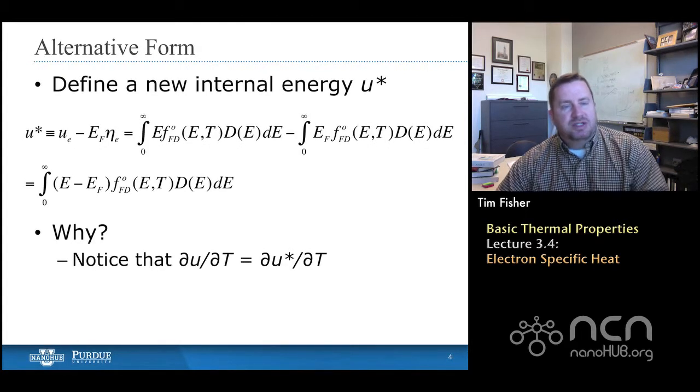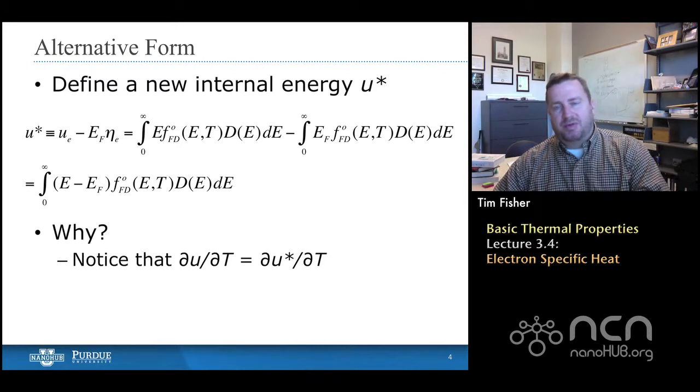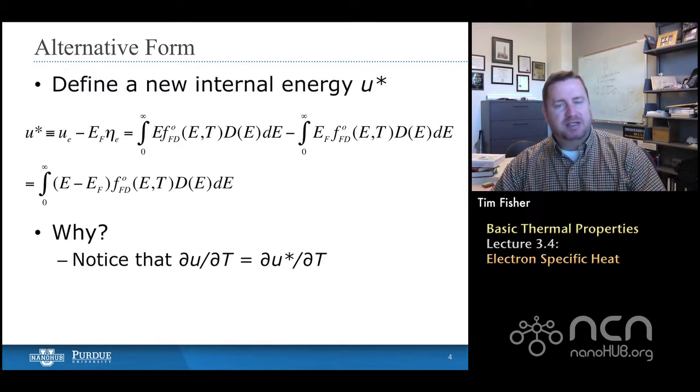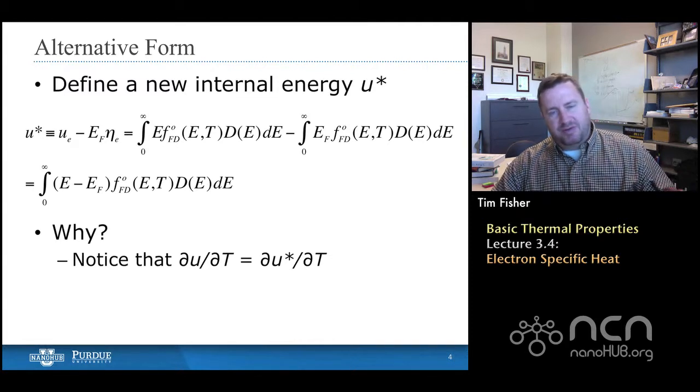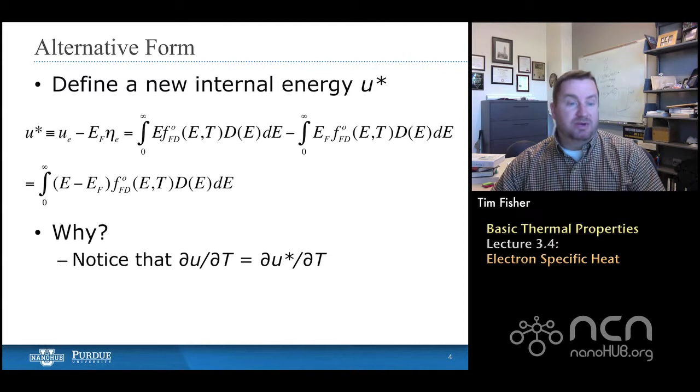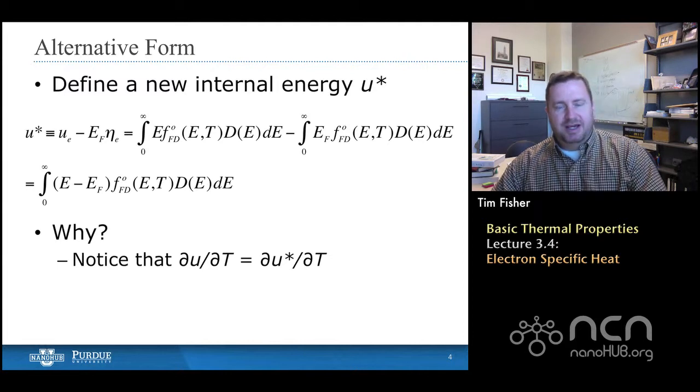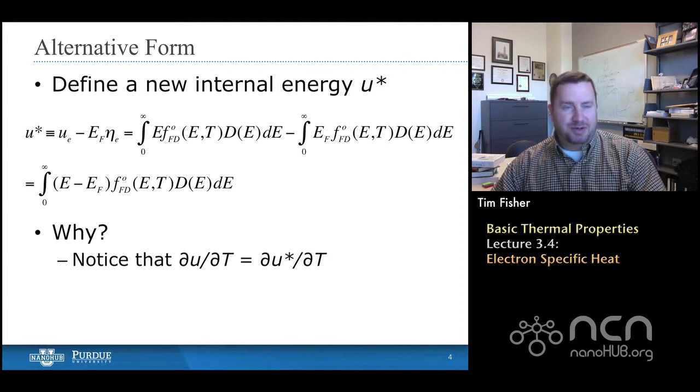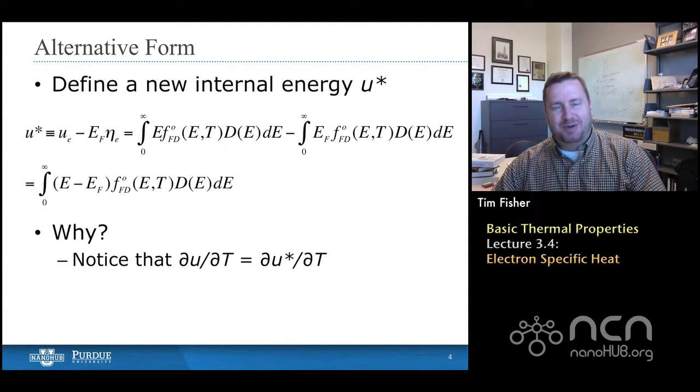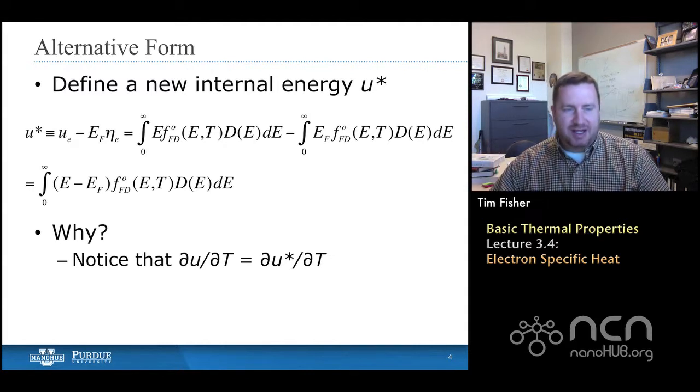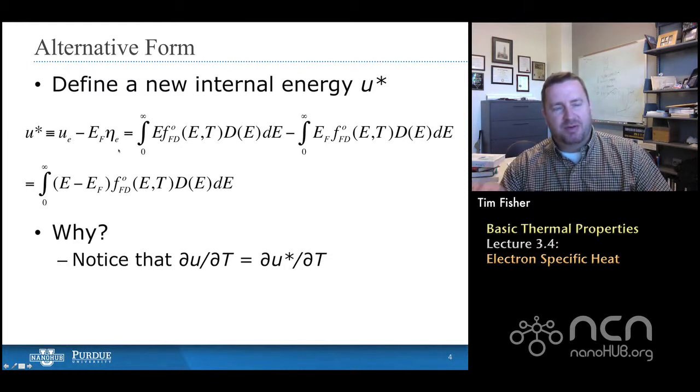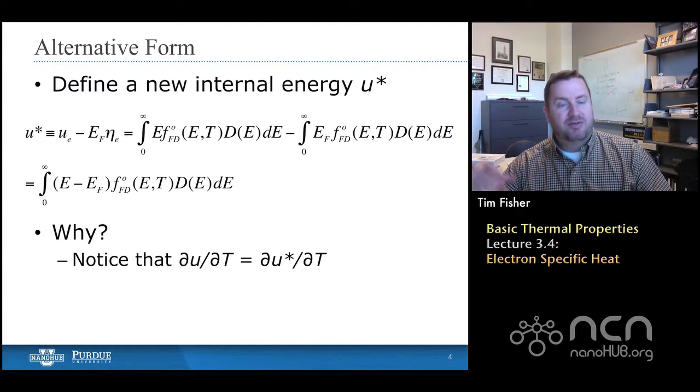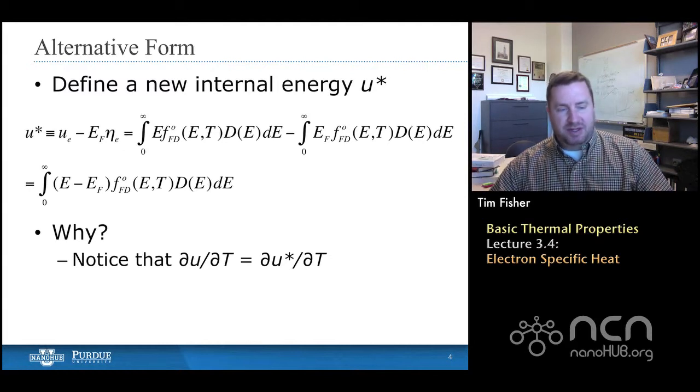Now, one thing we're going to do in the derivation, remember we're after the specific heat or specific heat capacity, we're going to do a little bit of a digression here for a mathematical convenience, and it won't be so obvious why we're doing it until the end. But we're going to define a new internal energy, so instead of saying this internal energy U sub E, we're going to subtract the Fermi energy multiplied by that electron density from it.